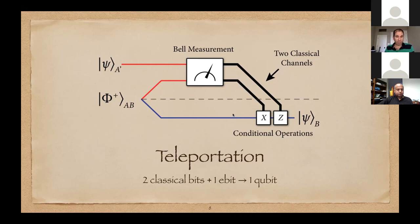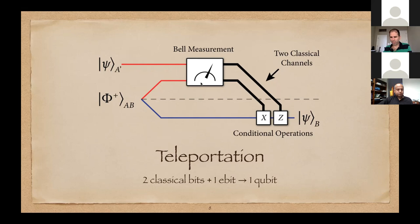Furthermore, if an eavesdropper has access only to Bob's system but not the classical bits, that system is in a maximally mixed state. Even after the measurement is performed, the qubit is still in a maximally mixed state, and it's only after the classical bits are received that the reconstruction is possible. From the perspective of quantum Shannon theory, we can ask: what if the entangled state is noisy? What if we have many copies? With a summer student, we were investigating this problem using concepts like k-extendability and positive partial transpose.